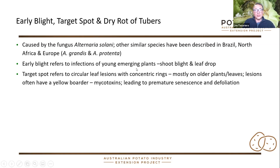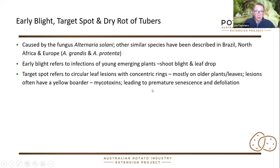Early blight refers to that blighting of young plants. We don't see that so much. Our main issue is with target spot as a disease coming in later into the crop and prematurely senescing the crop. That's due to the fact that these Alternaria species produce toxins that can actually affect the plant and cause this defoliation or senescence.